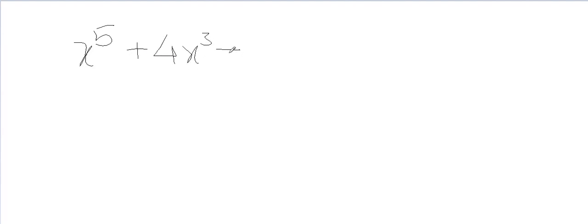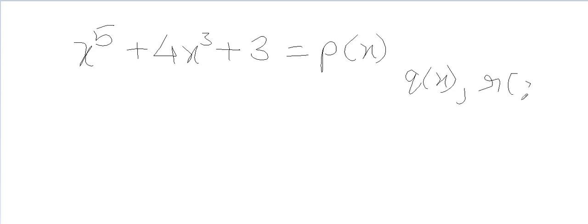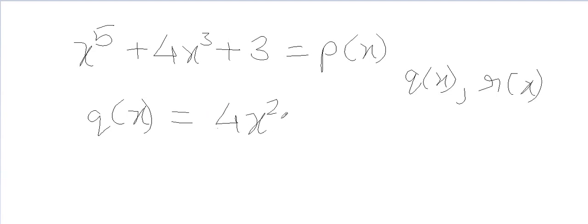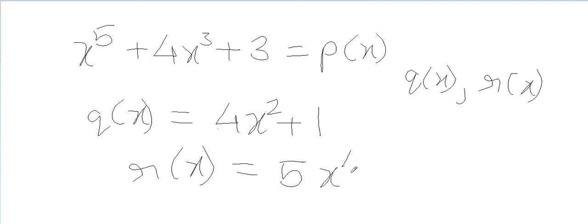If we have a polynomial which is a function of x — a polynomial in a single variable — we can denote it by p(x), q(x), or r(x). For example, q(x) equals 4x squared plus 1, and r(x) equals 5x to the power 4. This is just a notation.